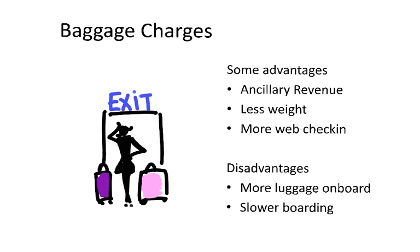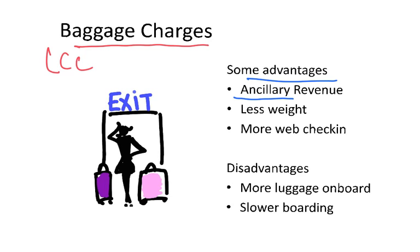Another feature started by low-cost carriers is charging for baggage. In the past, passengers could check in a couple of pieces of luggage included. But low-cost carriers changed this: a small carry-on is included, and passengers pay for anything else they want to transport. The advantages include generating ancillary revenue — any revenue from sources other than the ticket — less weight on the aircraft leading to lower fuel consumption, and more web check-in usage since passengers without checked bags don't need to visit the counter.